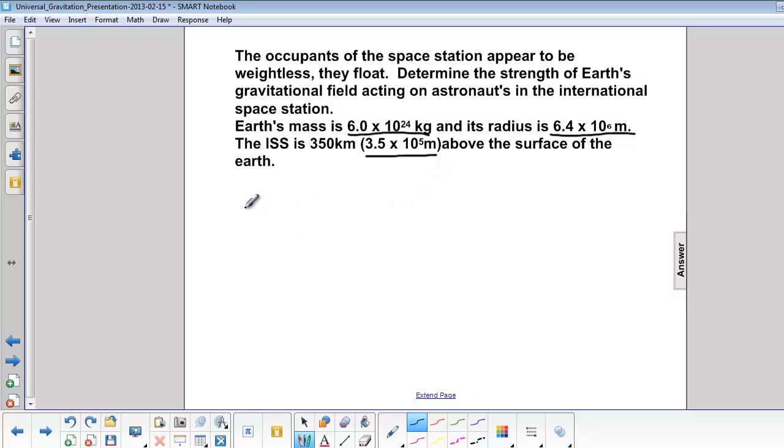So first let's calculate R. So remember, R is capital R plus H. So the distance to the center of the Earth would be the radius of the Earth plus the height of the space station. So that is 6.4 times 10 to the 6th meters plus 3.5 times 10 to the 5th meters. So now to add exponents, we have to make sure they're both the same. So then this 3.5 times 10 to the 5th should become 0.3 times 10 to the 6th. Now we can add them.